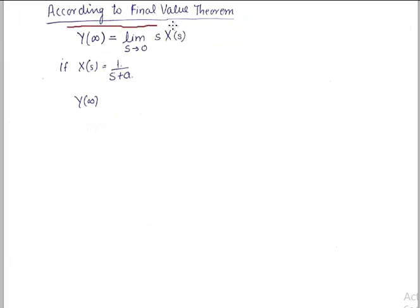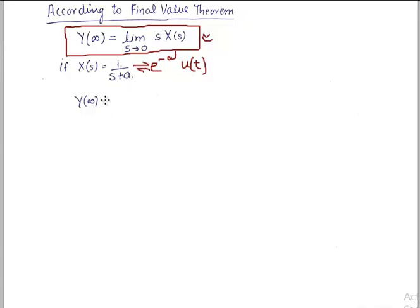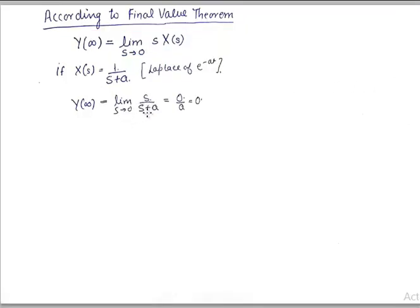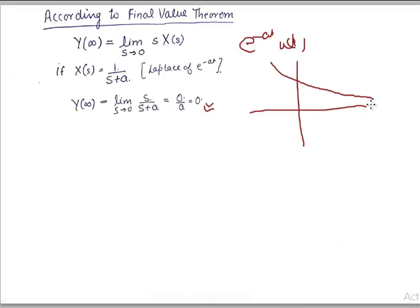Now what about the final value theorem? The final value is obtained by putting the limit s approaches 0 of s times X(s). If we apply this to e raised to power minus at times u(t), whose Laplace transform is 1 upon s plus a, we compute the limit as s approaches 0 of s upon s plus a, which gives 0 upon a, which is 0. And we know the decaying exponential reaches a value of 0 in time domain, so the final value theorem holds true here.